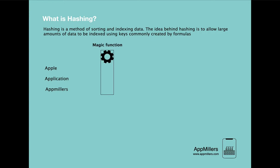Here is our magic function. Using it to convert these strings to numbers works like this: apple is converted to 18, application is converted to 20, and app millers is converted to 22. We will discuss in detail later how this function works and what formulas it uses. For now, just know that this function is responsible for converting strings into numbers.